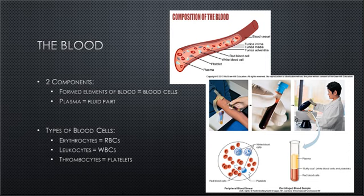An average-sized adult has a blood volume of about 5.3 quarts, which is about 5 liters. Another part of the blood to be aware of is the serum. When the proteins involved in clotting have been removed from the plasma, the remaining liquid is called serum. So it's the plasma minus the clotting proteins that equals the serum.